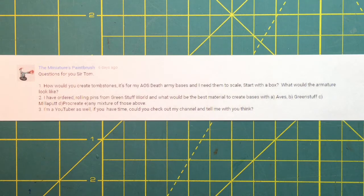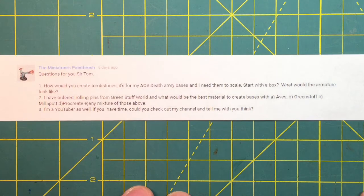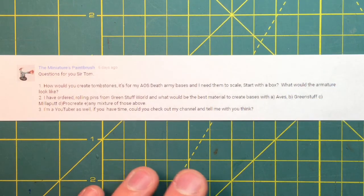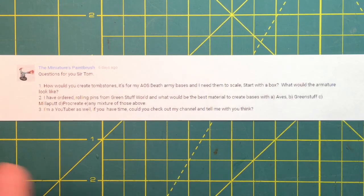Second question: I have ordered rolling pins from Green Stuff World and what would be the best material to create bases with - Apoxie, green stuff, Milliput, Procreate, or any mixture of these above? I would recommend, especially if you're doing an entire base and not just a layer on top, I would use green stuff and Apoxie in about a 50-50 mix, or Procreate and Apoxie if that's what you have. You'll get the same result, but the key is that by adding in the Apoxie it'll get a little more rigid and you can fine tune it with filing if necessary.